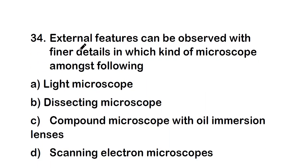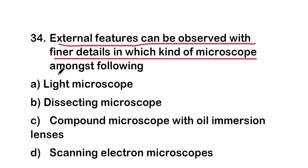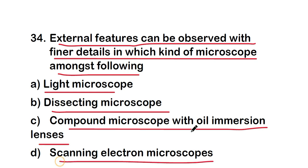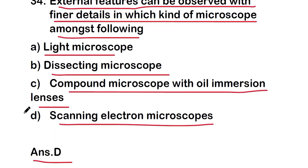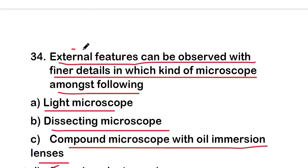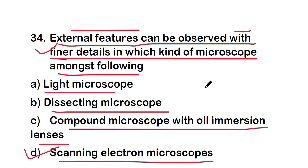Next question: external features can be observed with fine details in which kind of microscope — light microscope, dissecting microscope, compound microscope with oil immersion lens, or scanning electron microscope? The right answer is option D — scanning electron microscope is used to observe external features with finer details.